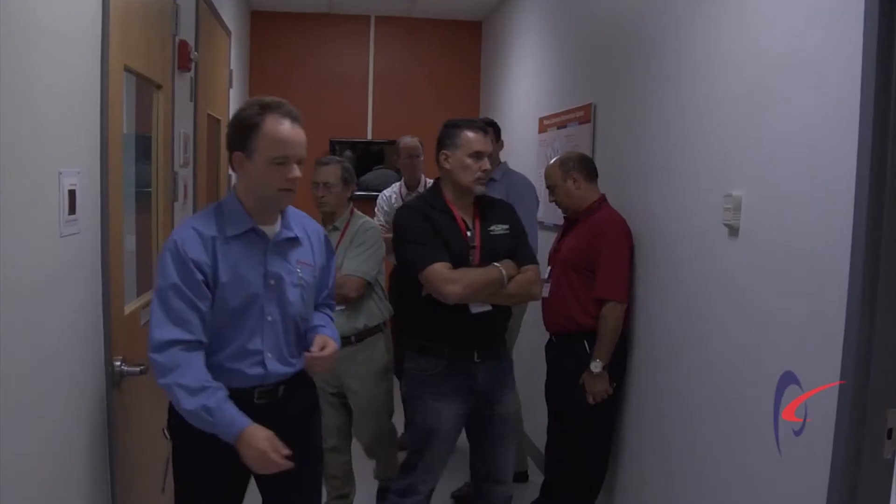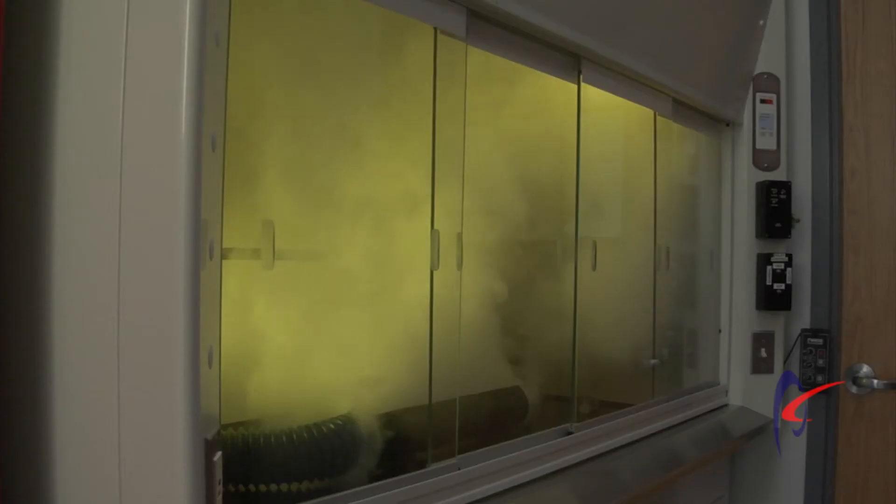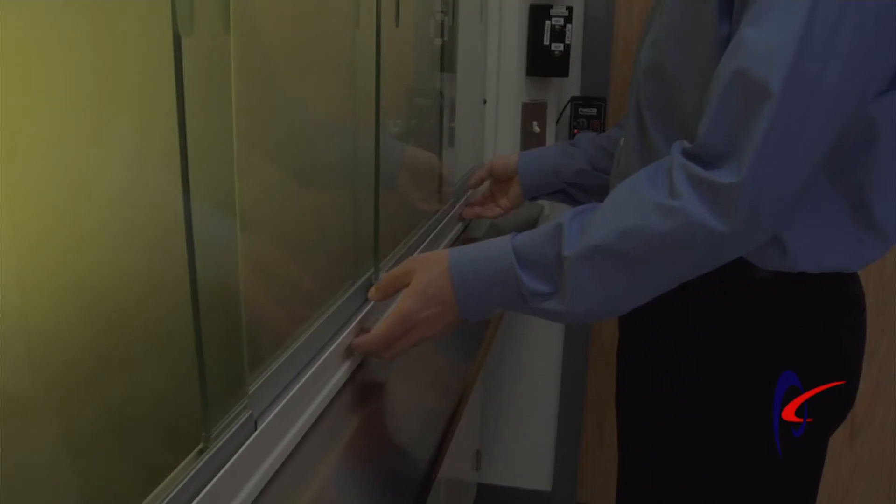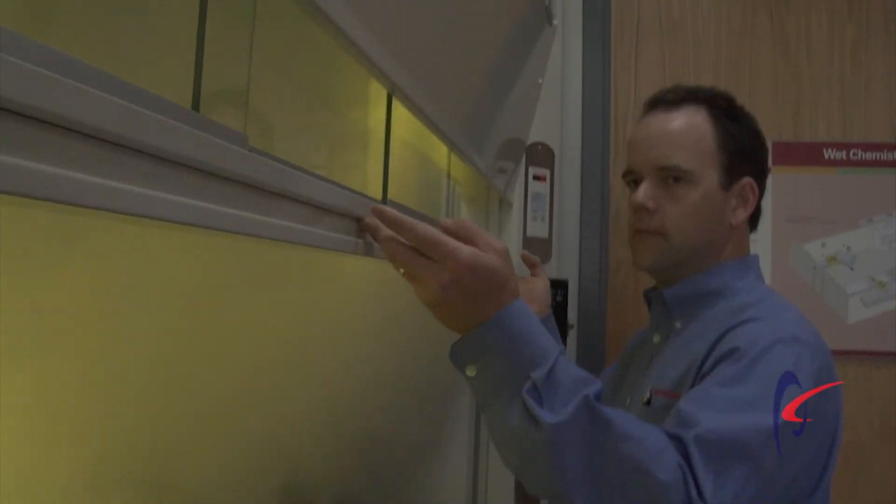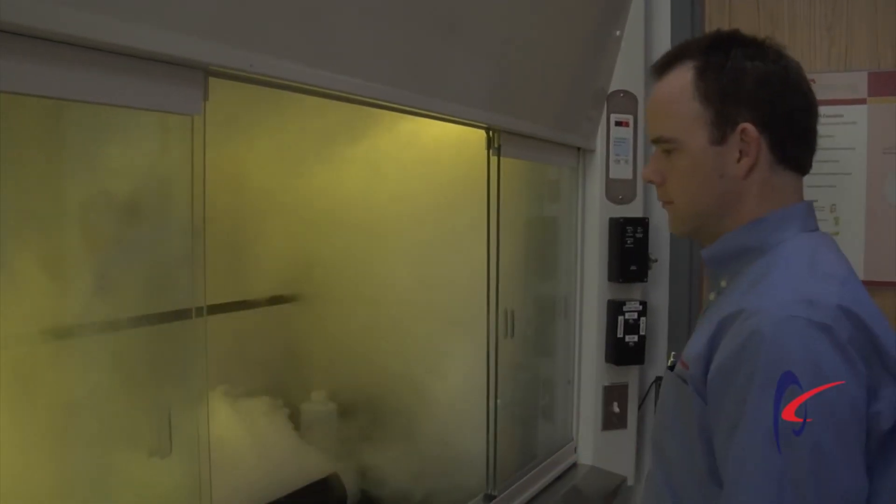The fume hood containment demonstration that we do here at Phoenix Controls and all of our customer visits is very dynamic. We have a smoke machine inside a fume hood so you can visualize the airflow patterns. And we operate that in a Phoenix mode, which is that less than one second speed of response. Move the sash into various different positions, openings, closings, and we see that visually from that smoke, proper containment at all times and all positions.